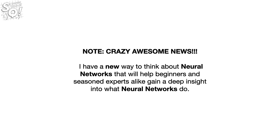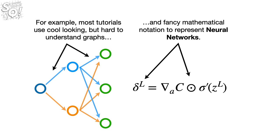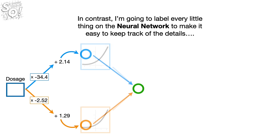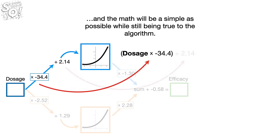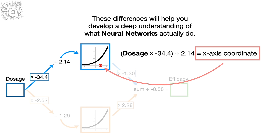I have a new way to think about neural networks that will help beginners and seasoned experts alike gain a deep insight into what neural networks do. For example, most tutorials use cool-looking but hard-to-understand graphs and fancy mathematical notation to represent neural networks. In contrast, I'm going to label every little thing on the neural network to make it easy to keep track of the details, and the math will be as simple as possible while still being true to the algorithm. These differences will help you develop a deep understanding of what neural networks actually do.